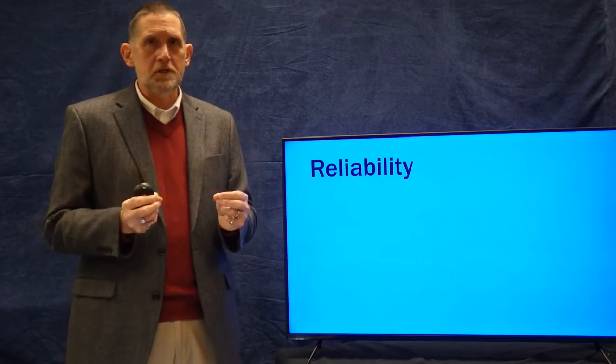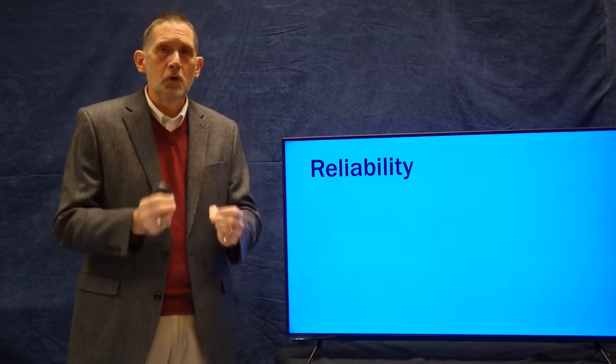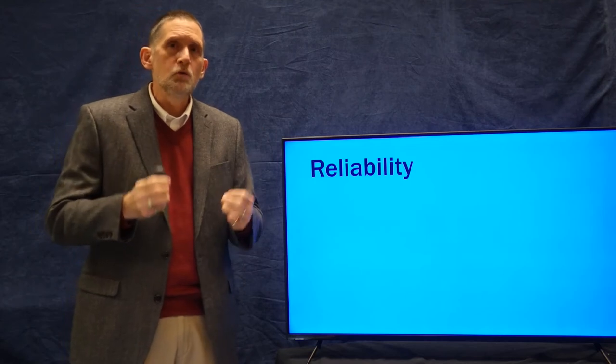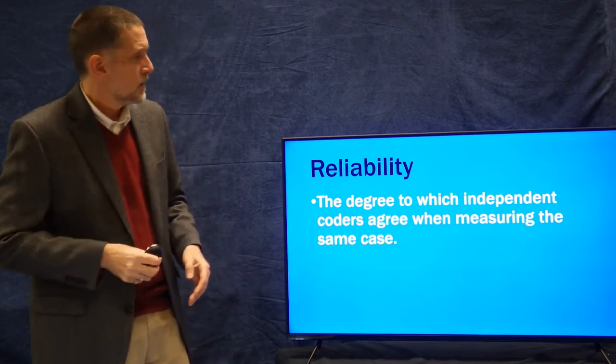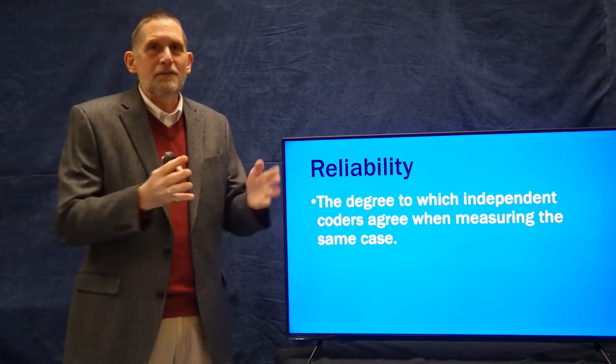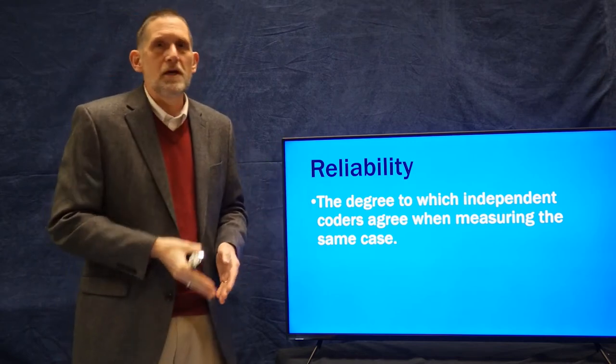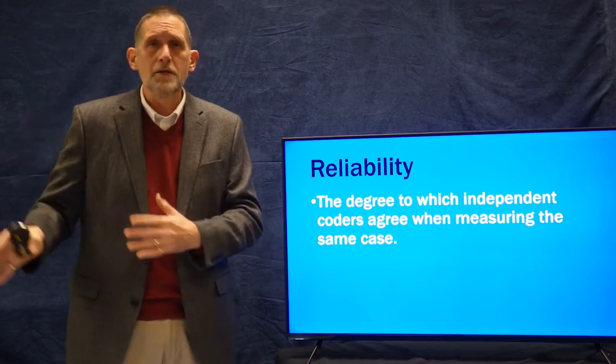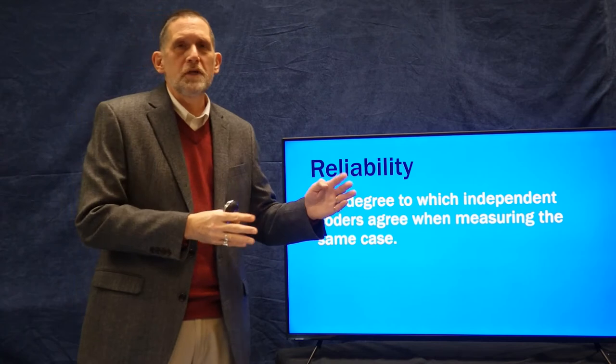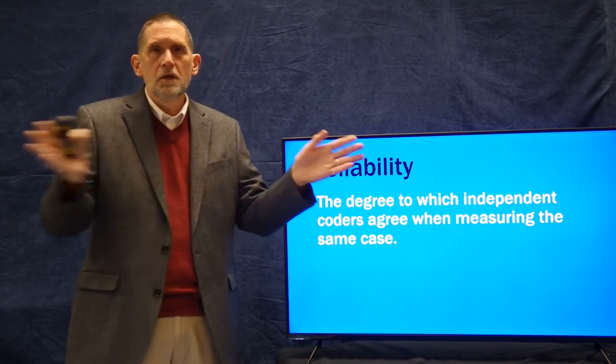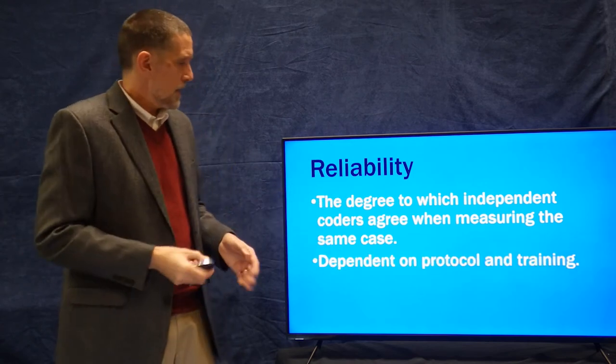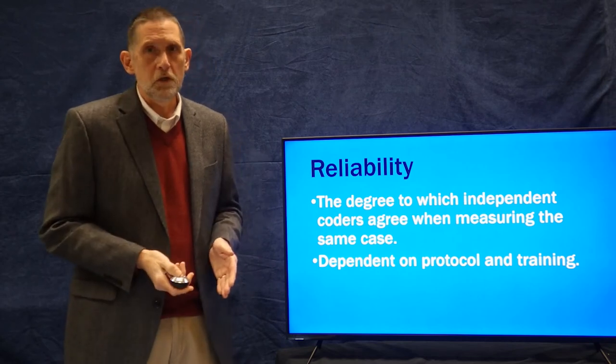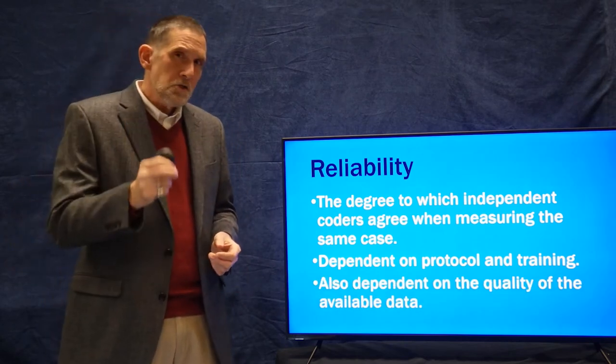When we're taking measurements, when we're coding, when we're creating a coding protocol, we want to be sure that the measure we're making or the coding protocol we're making will result in what's called reliable data. And what that basically means is that independent observers are going to get the same measurement if they're measuring the same thing. That it's a reliable measurement. Each time you do the measurement, it's going to come up with the same thing if you're measuring the same object, person, concept. And then if you have different people doing those measurements, they're going to be consistent. If they all measure the same person, they're all going to come up with the same measurement. That's called reliability. And reliability is dependent on the protocol you create for coding and on the training you do of the people doing the coding.